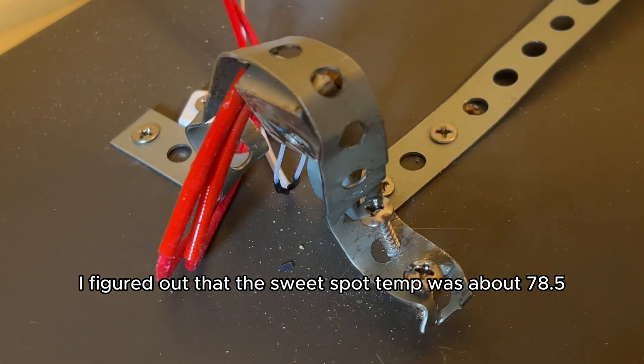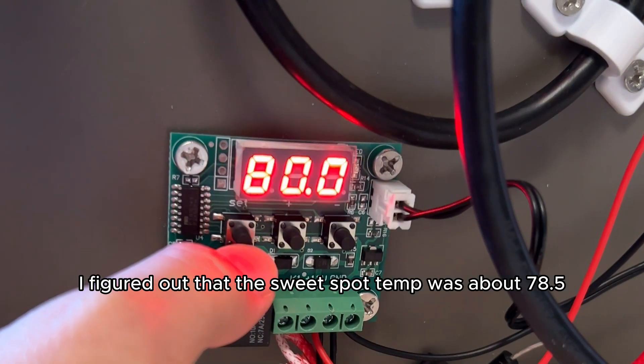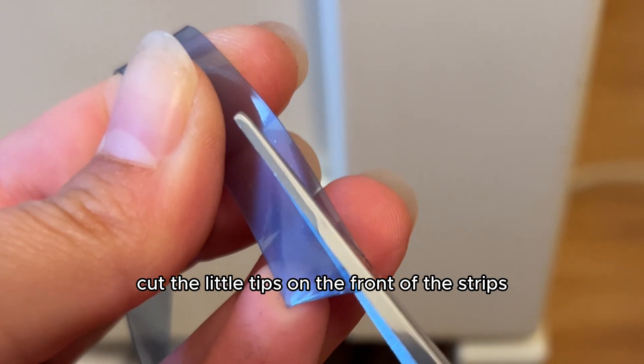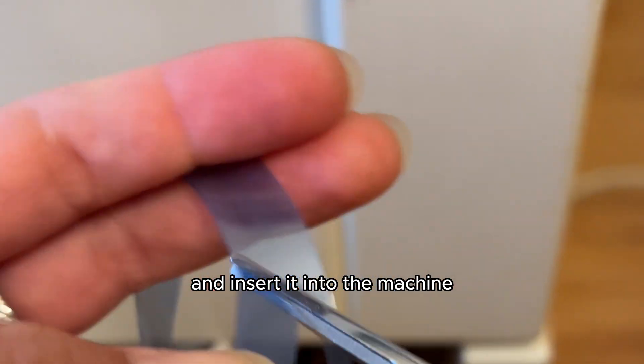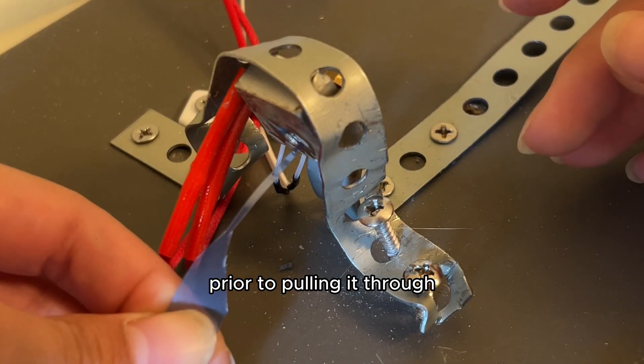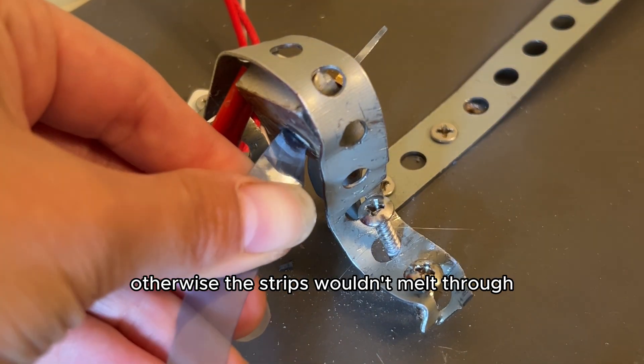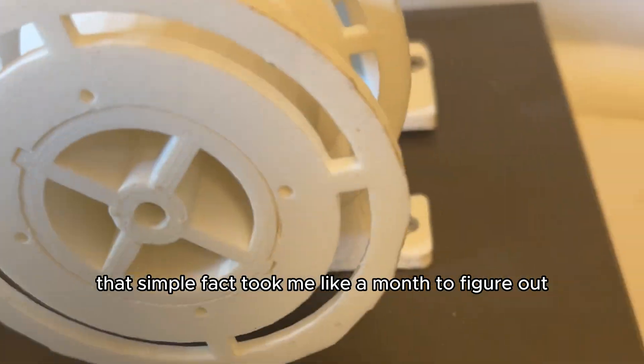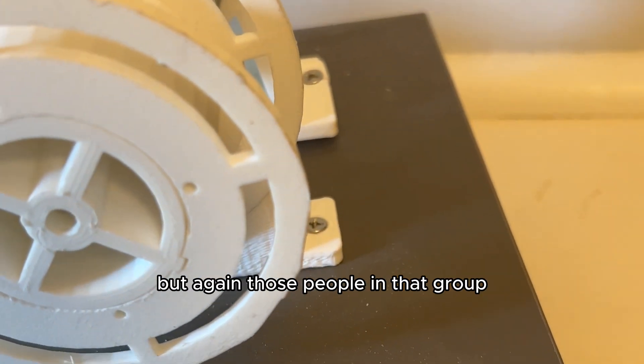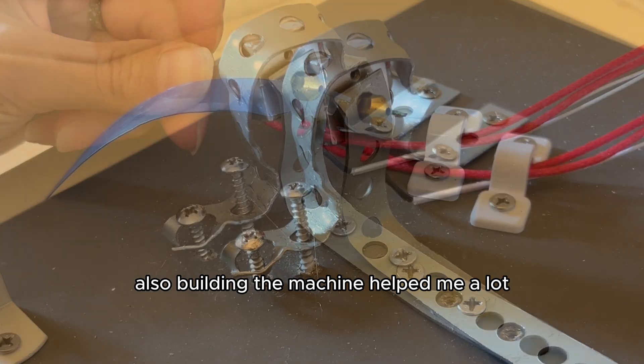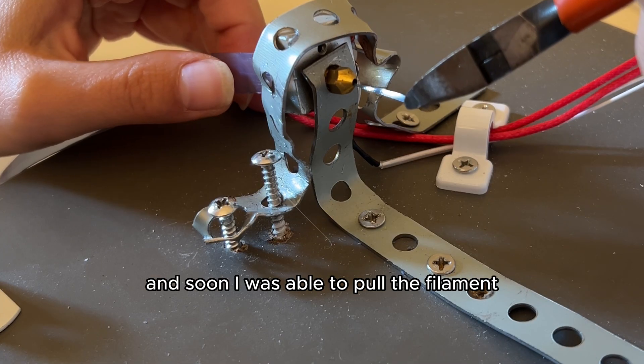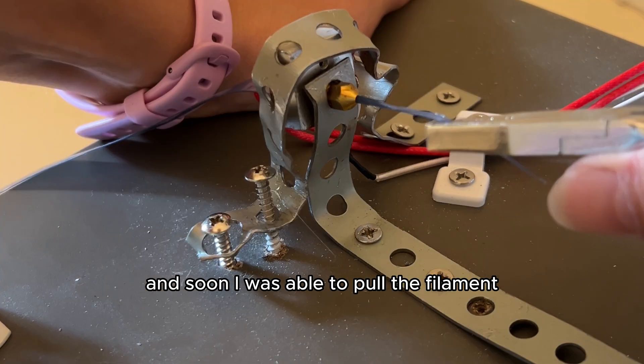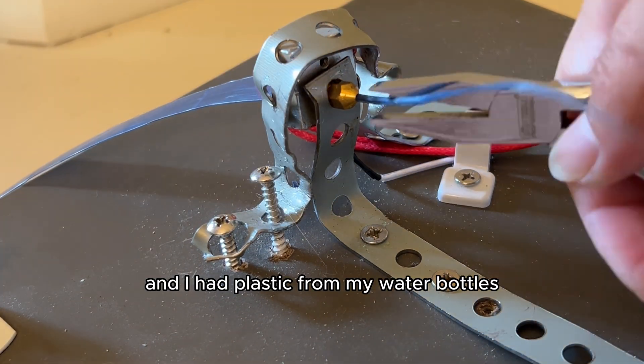I figured out that the sweet spot temp was about 78.5 and that I had to cut the little tips on the front of the strips and insert it into the machine prior to pulling it through, otherwise the strips wouldn't melt through. That simple fact took me like a month to figure out, but those people in that group also building the machine helped me a lot.